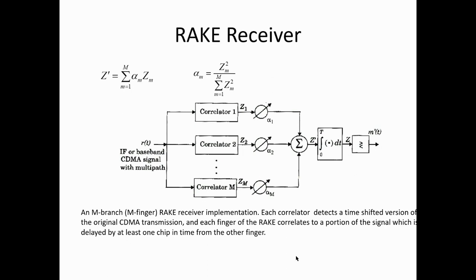The RAKE receiver has multiple receiving elements called correlators, which are generally referred to as fingers. Looking at the diagram, this RAKE receiver has m correlators — these m correlators are called the m fingers of the RAKE receiver. Each of these correlators will receive a time-shifted version of the signal.